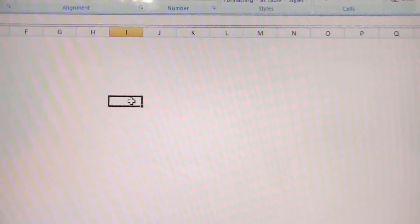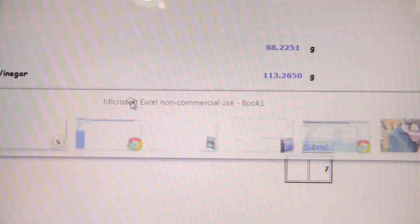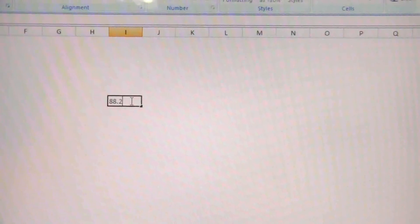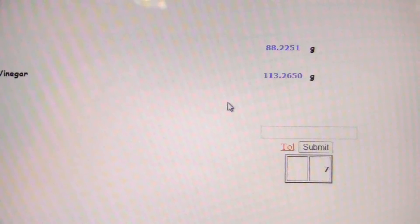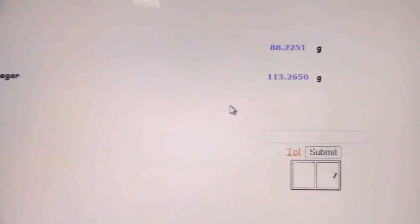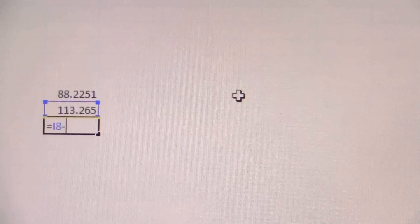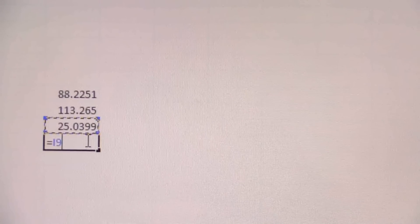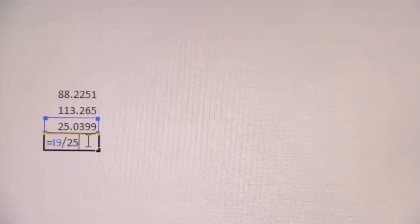So I have 88.2251 and 113.2650. Now if I take the difference between those, I get 25.0399, and I'm going to take this and divide it by my 25.00, or just the 25.